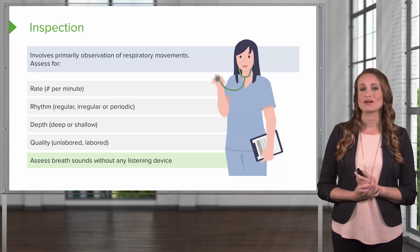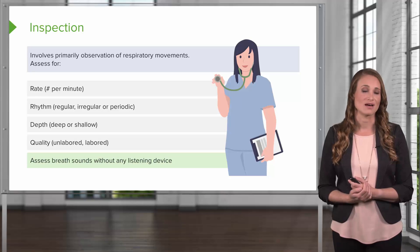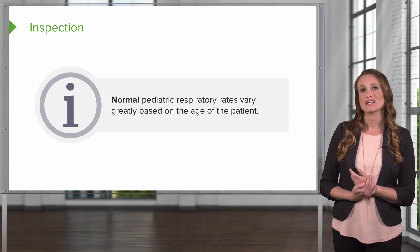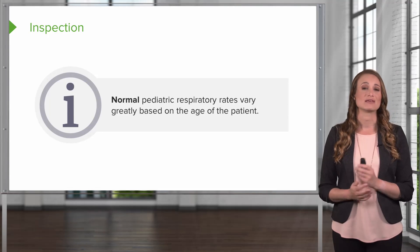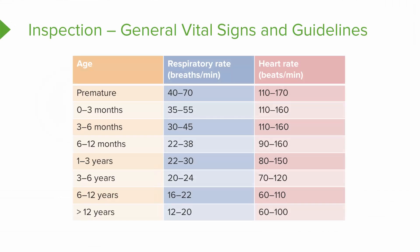Next, you'll want to assess breath sounds without any listening device — just sitting next to your patient and listening for sounds when they breathe. The normal pediatric respiratory rates are going to vary greatly based on the age of the patient, and this is really important for the nurse and clinician to know. Starting with premature babies all the way down to greater than 12-year-olds, there's extreme variation in normal respiratory rate and breaths per minute. The heart rate varies as well. The nurse really needs to know the ballpark of these norms to know if your patient is in a red flag zone — too fast or too slow.